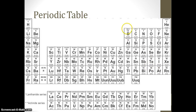Boron is a metalloid. Silicon and germanium are also metalloids. Arsenic and antimony are metalloids. Tellurium is also a metalloid. Polonium will be a metal, and sometimes astatine is considered a metalloid. So we're very sure about these being metalloids.